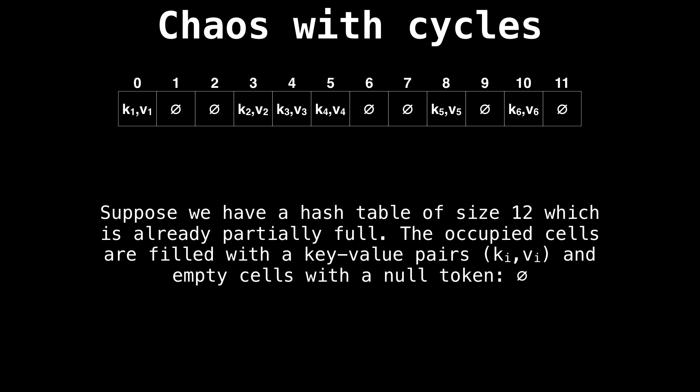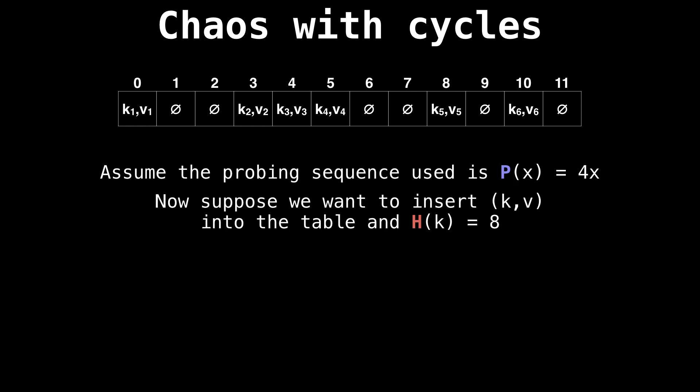Let's have a look at an example. Right here I have a hash table using open addressing and it's got some key value pairs already inserted. Assume that the circle with the bar through it is the null token. Further assume that we're using the probing sequence P(x) equals 4x. And suppose we want to insert a new key value pair into the table and that the key hashes to 8.